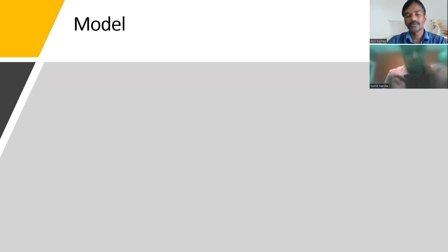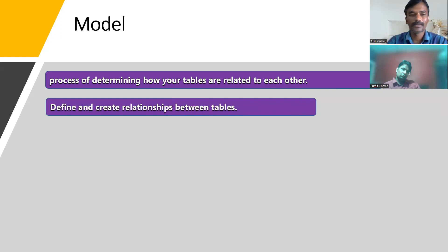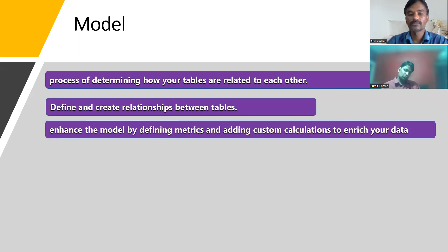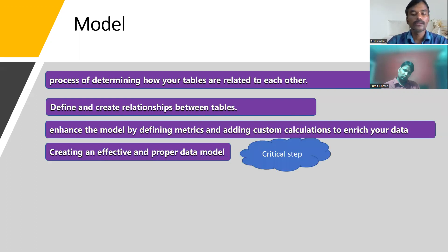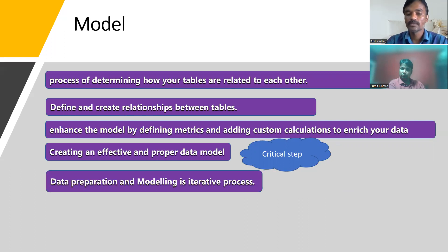The next key area is Model — the process of determining how your tables are related to each other. This involves identifying relationships, setting joins between them, and defining how to use them. The model step includes defining and creating relationships between tables, and enriching your data by defining metrics and adding custom calculations. Creating an effective and proper data model is a critical step because the data model is the starting point for any reports, visualizations, or dashboards to be created — it should be effective both functionally and from a performance point of view.